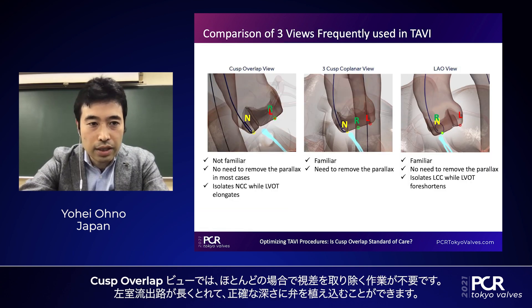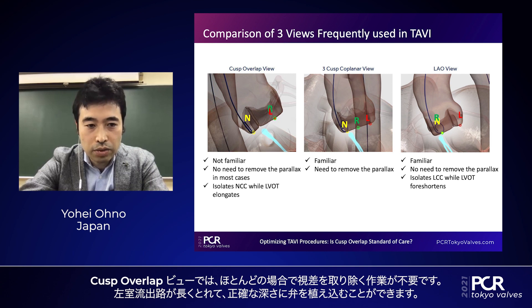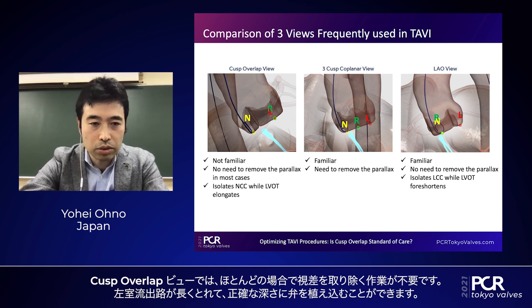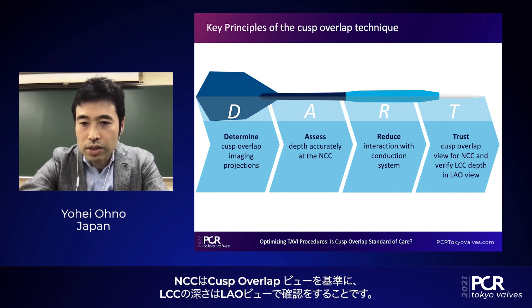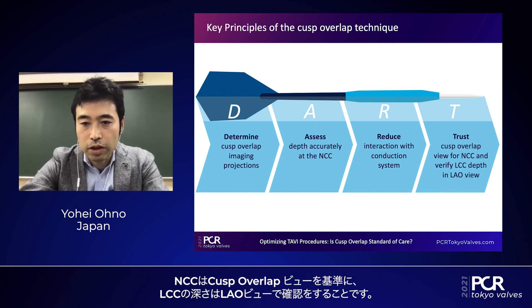As mentioned, in this cusp overlap technique, there is basically no need to remove parallax in most cases. It nicely elongates the left ventricular outflow tract, thereby allowing accurate valve implantation depth. We can trust the cusp overlap view at the NCC side and then go to the LAL view to confirm the depth of the LCC side.